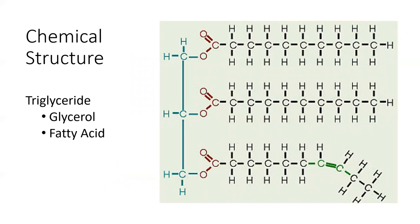Those triglycerides are a glycerol backbone — a three-carbon molecule — with carbon chains attached to it. Every time we break down those carbon bonds, it releases energy through metabolism. This is an example of an unsaturated fat, because you can see a double bond on the same side, which causes a kink in the chain — meaning this fat is liquid at room temperature. A saturated fat is solid at room temperature; an unsaturated fat is liquid at room temperature.